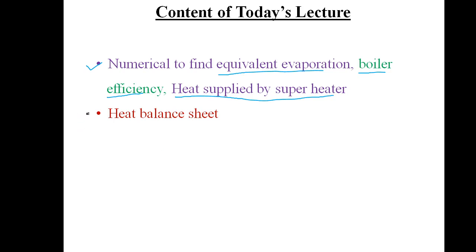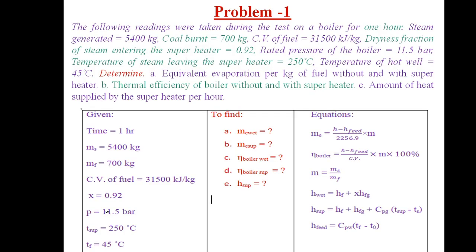Then we will find out a heat balance sheet for a problem. Coming to this problem, the following readings were taken during the test on a boiler for one hour. Tests were taken for one hour. So this data is given — time duration is one hour.